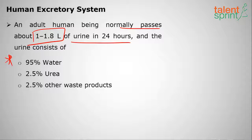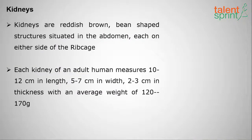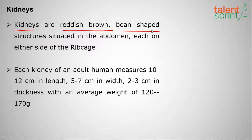In one liter of urine, 950 ml will be water, 2.5% will be urea, and 2.5% will be other waste products. So 95% of urine is water — remember this, it is very important for examinations. Moving on to the first part of the human excretory system: kidneys. They are reddish-brown, bean-shaped structures situated in the abdomen, one on either side of the rib cage.